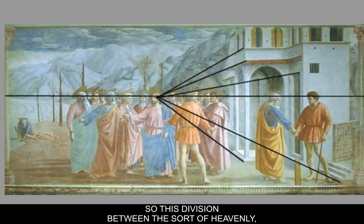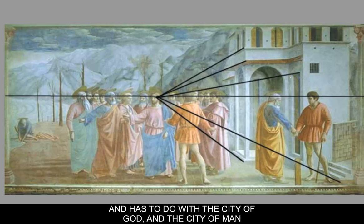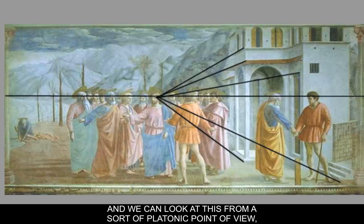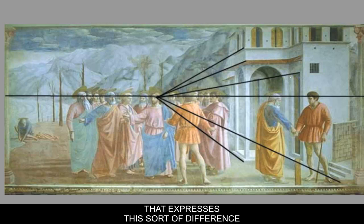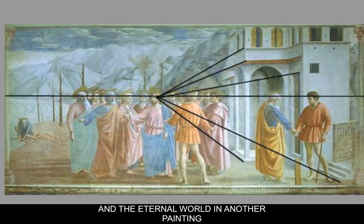This division between the heavenly or ideal realm and the physical world is kind of Platonic in nature — it has to do with the City of God versus the City of Man. We can look at this from a Platonic point of view. There's another painting that expresses the difference between the carnal, physical world and the eternal world, which is roughly contemporary with Masaccio.